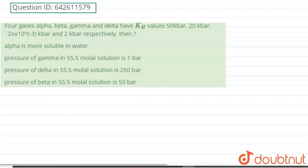Hello everyone, the question says four gases alpha, beta, gamma, and delta have KH values 50 kilobar, 20 kilobar, 2×10^-3 kilobar, and 2 kilobar respectively.